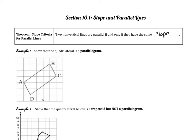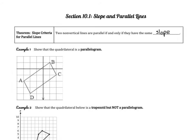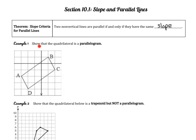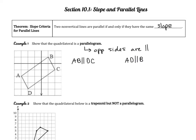If we look at example one, we're asked to show that the quadrilateral is a parallelogram. Remember the most basic definition of a parallelogram is that the opposite sides are parallel. So we need to show that AB is parallel to DC, and then we also need to show that AD is parallel to BC.